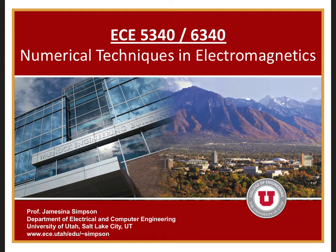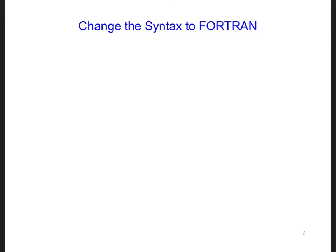Now that you're able to access the supercomputer and edit your codes on the supercomputer, let's start going through the changes that we need to make in order to fully change your .f90 file over to Fortran. First, the first thing we're going to do is add the program name on the first line of the code. So open up the file and type in 'program' and then give it whatever name you want, like '1d_fdtd_code'.